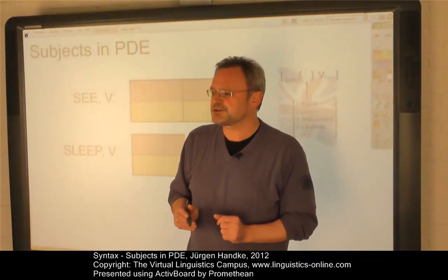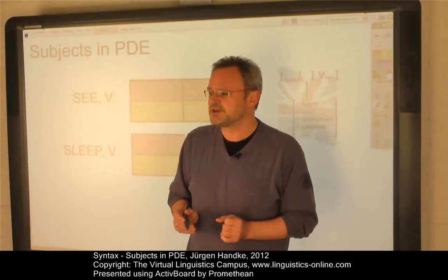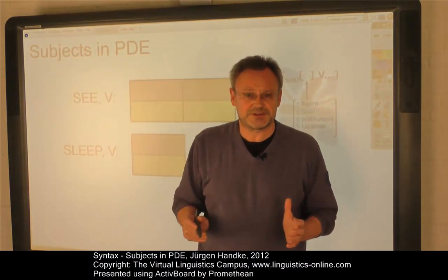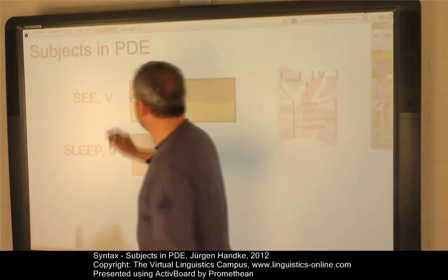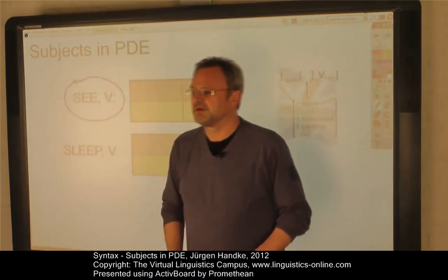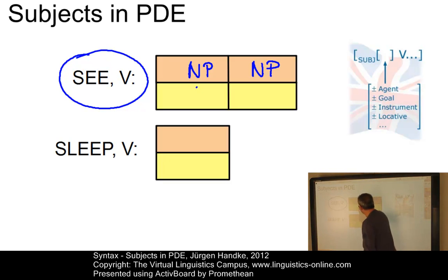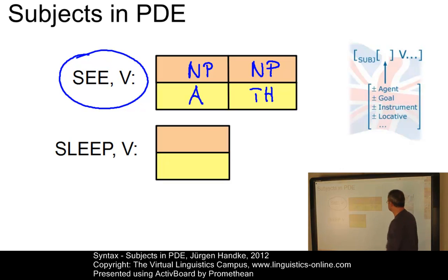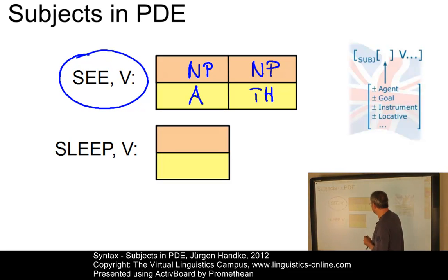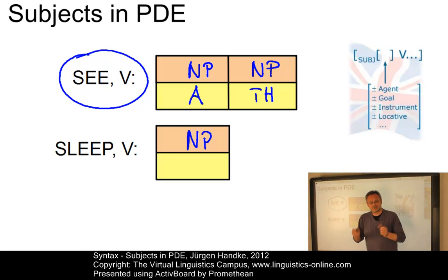In this e-lecture on Lexical Insertion, we defined the argument structure of verbs in terms of their thematic defaults using thematic grids. For example, for a verb like 'see', we defined its two noun phrase arguments as agent and as theme. An intransitive verb like 'sleep' would be even simpler — the only argument, the noun phrase as in 'John is sleeping', would receive the thematic role agent.